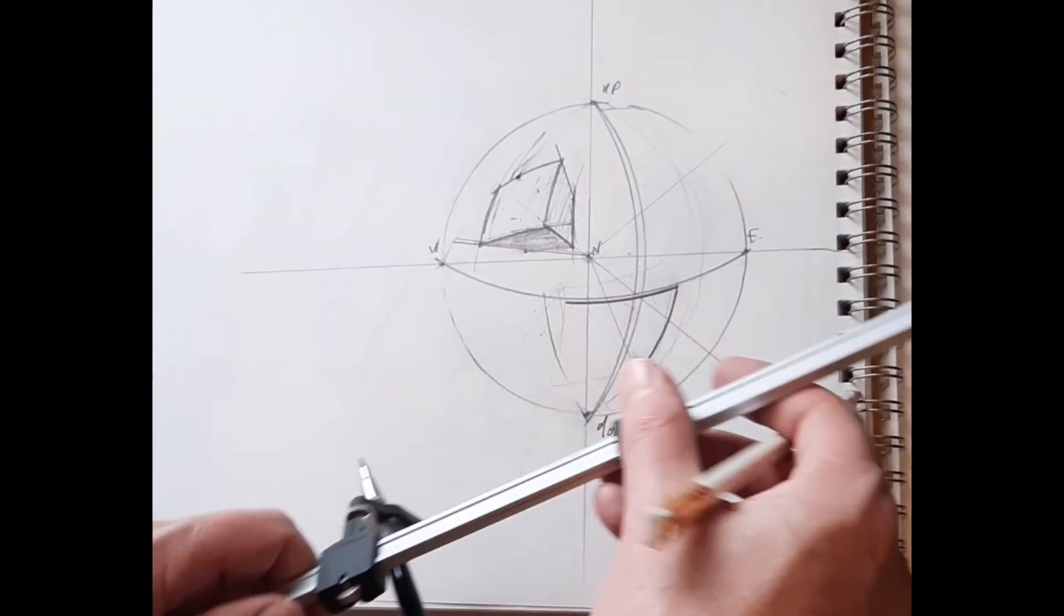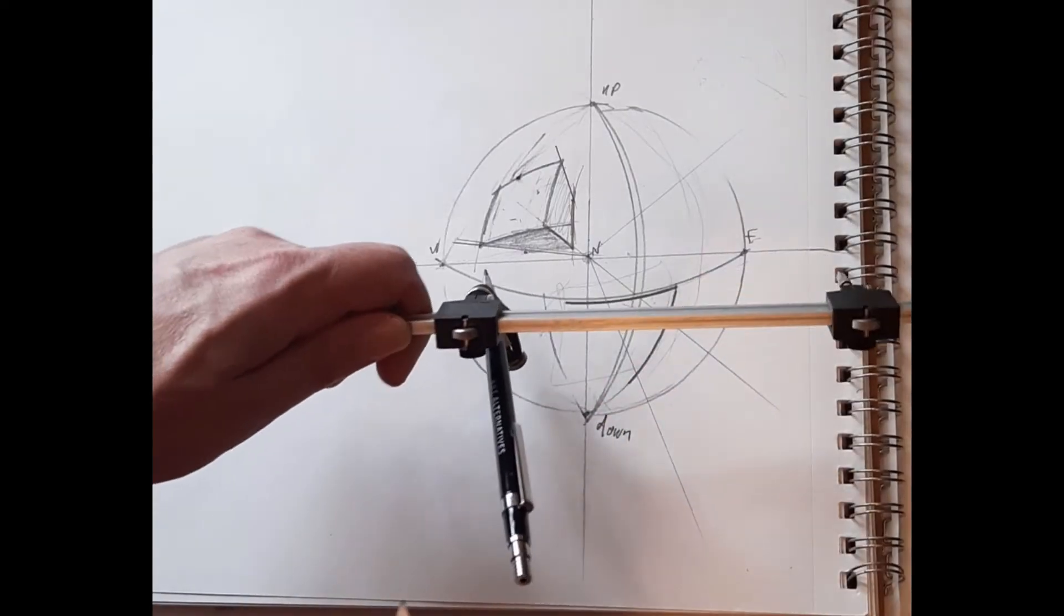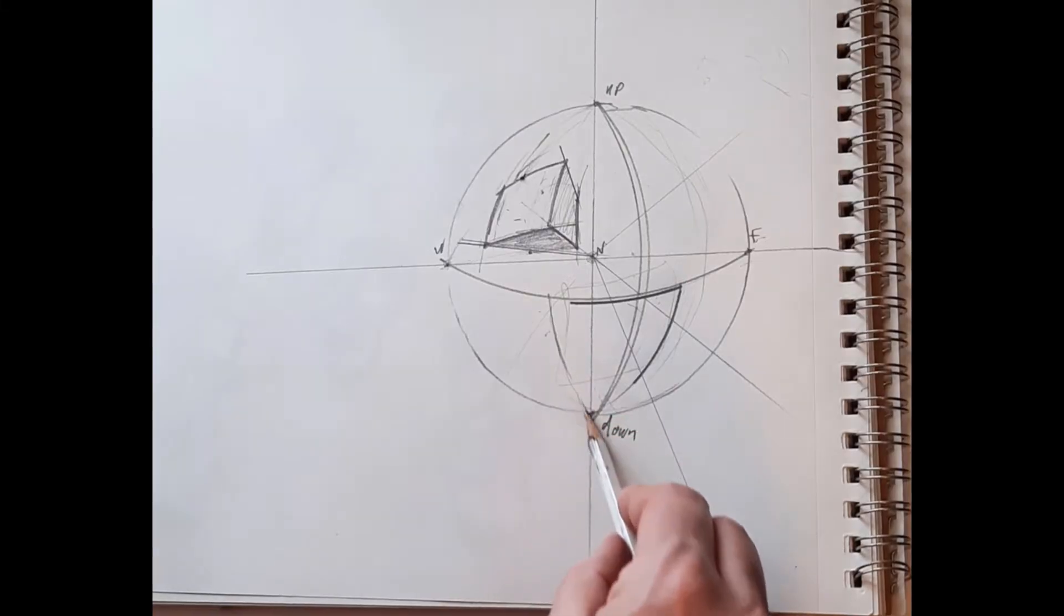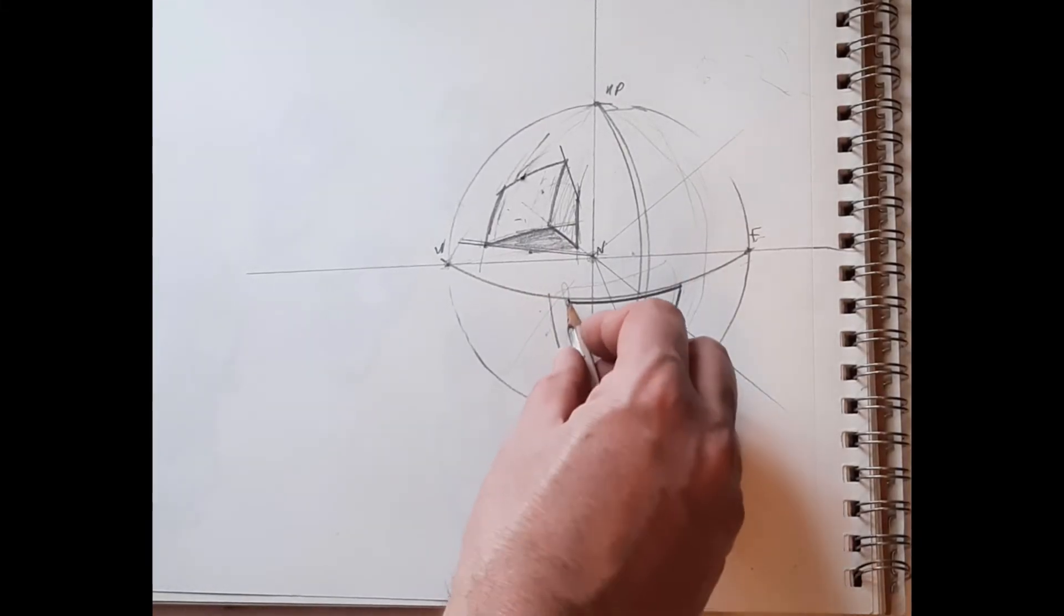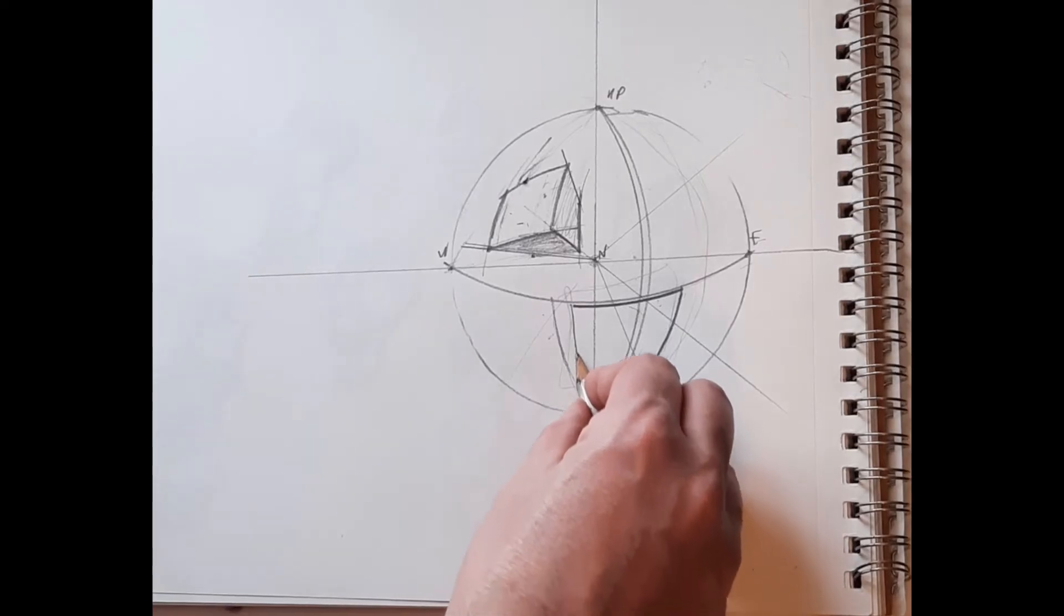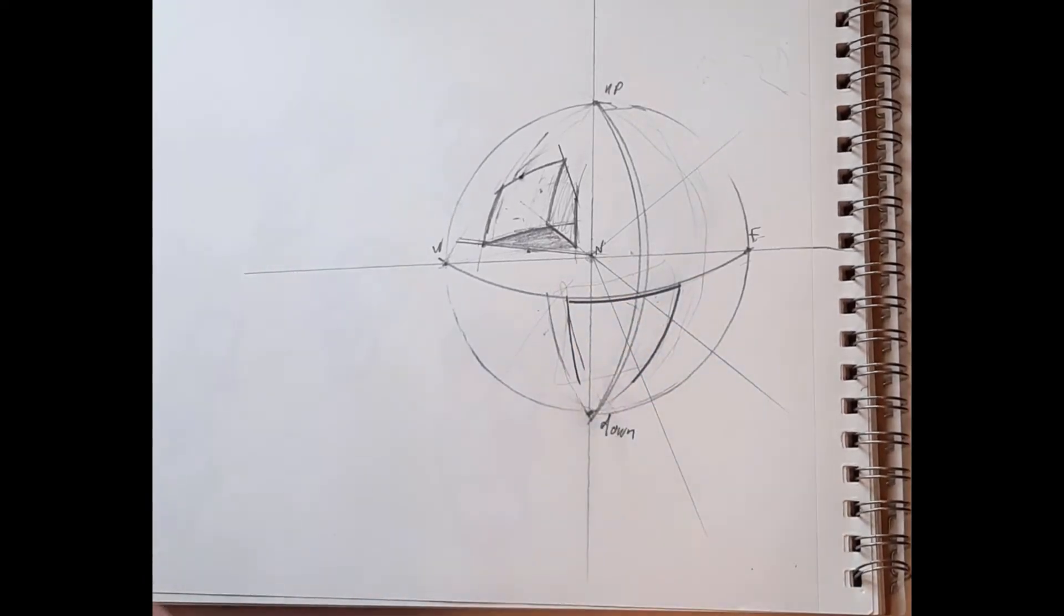And then I need to flip my point over the other side to try to draw this guy. And again, it's just going to go, I've got to have the end of my compass off the page there. So I'm just going to freehand that arc.